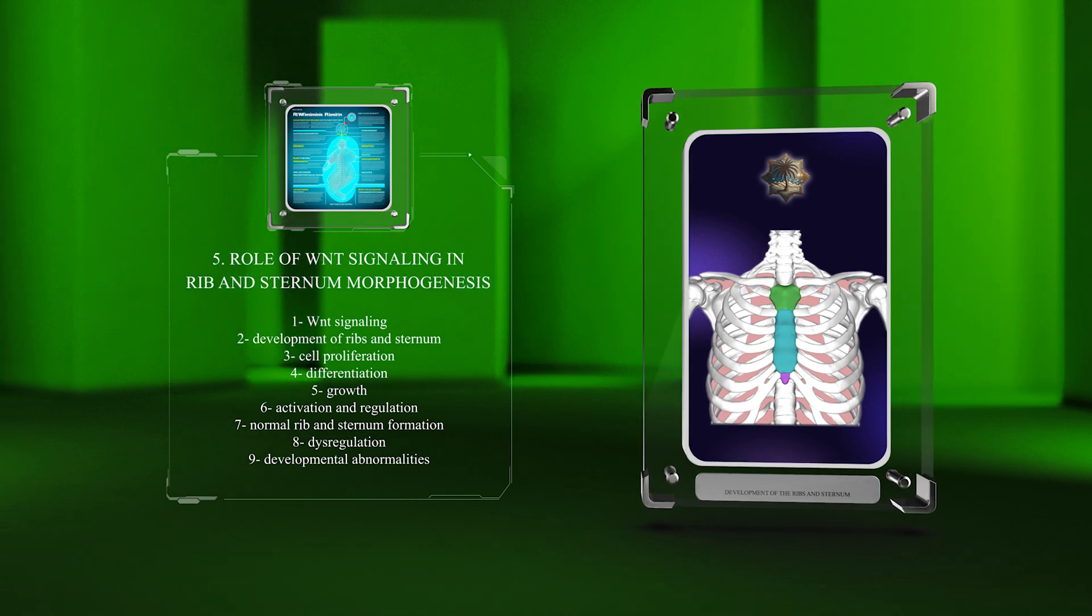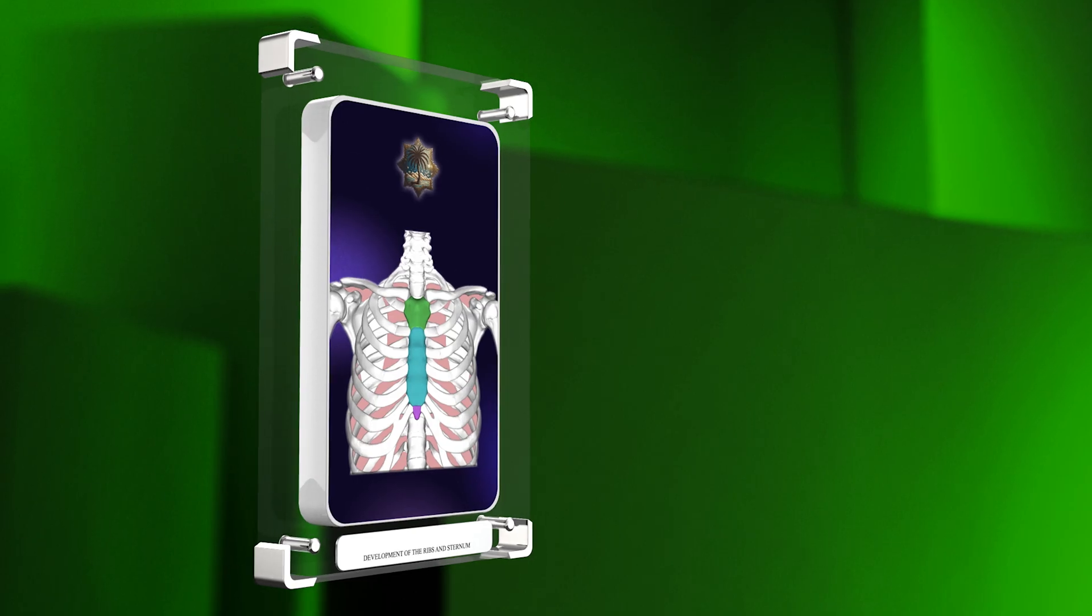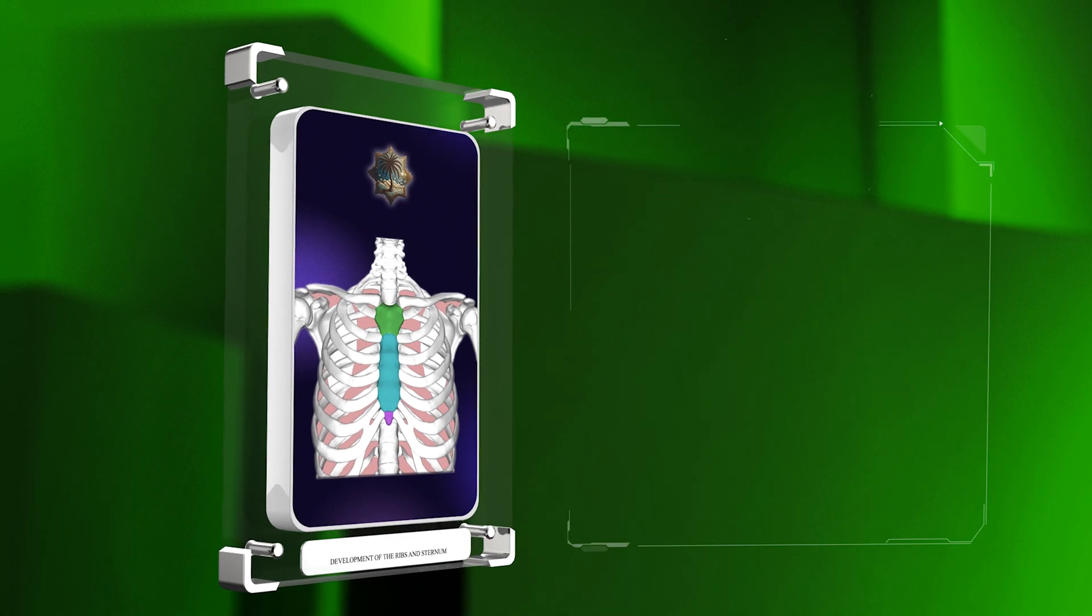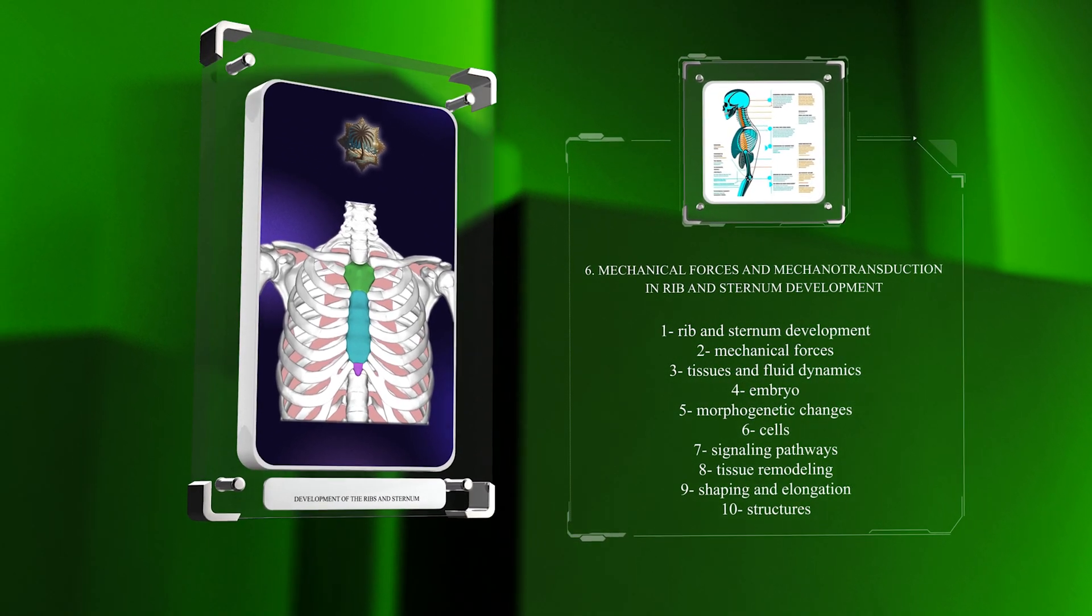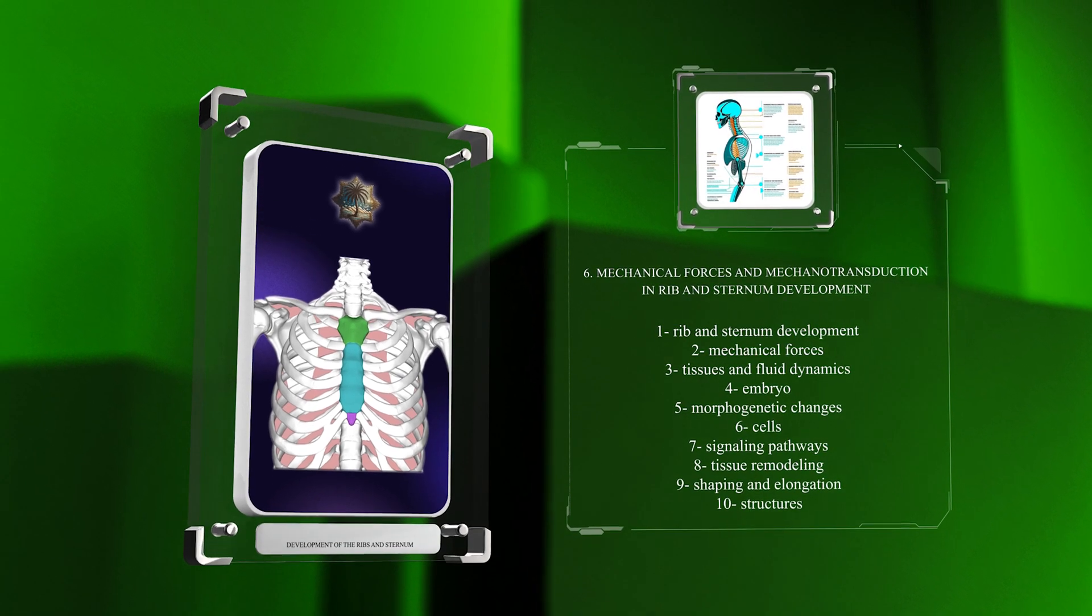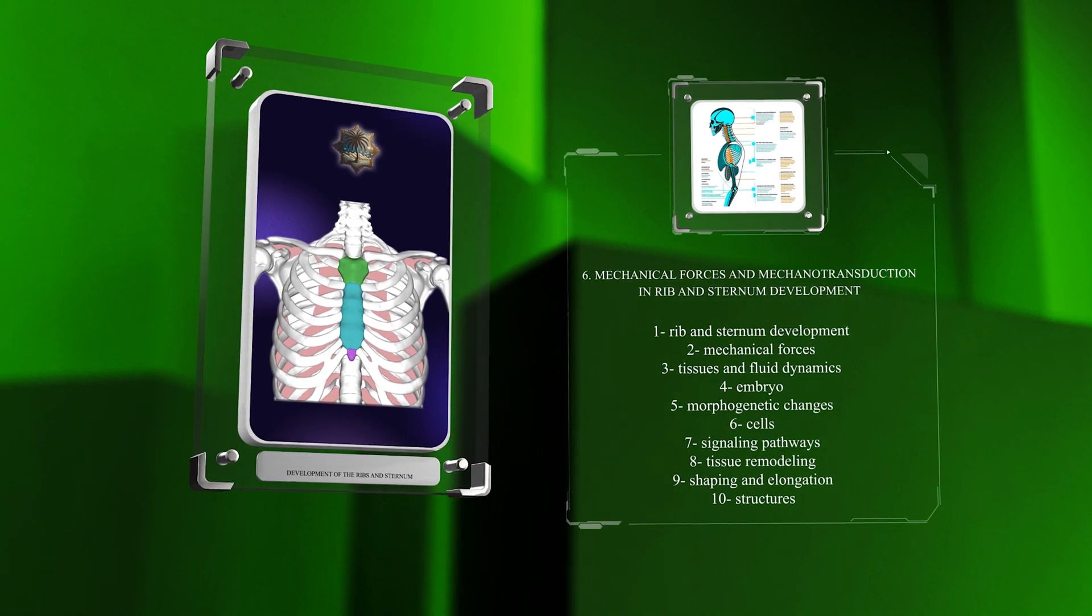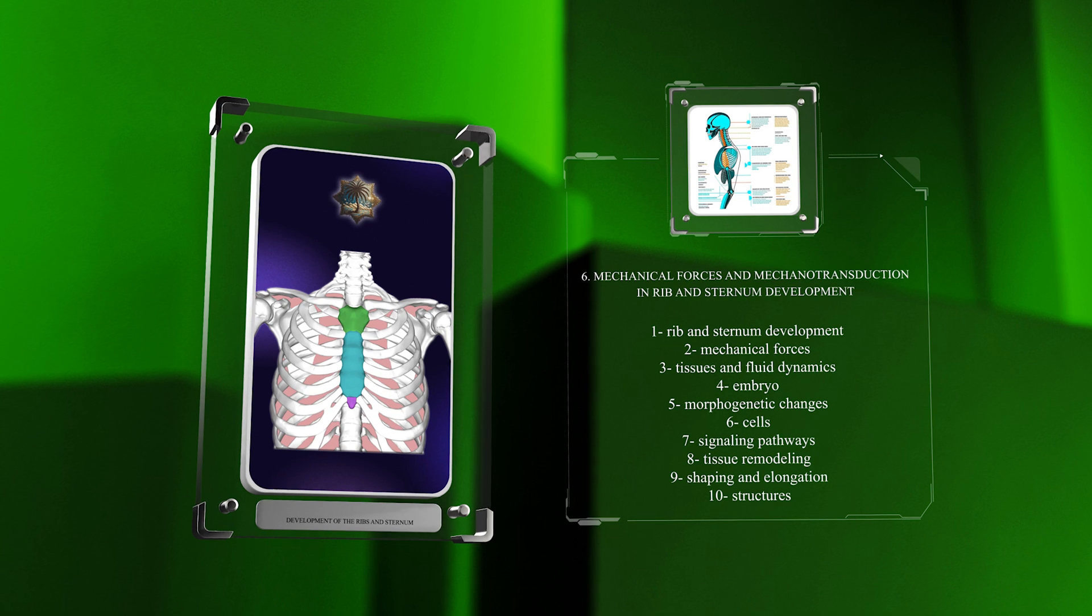During rib and sternum development, mechanical forces exerted by tissues and fluid dynamics in the embryo influence complex morphogenetic changes. Cells sense these forces and activate signaling pathways to regulate tissue remodeling, contributing to the shaping and elongation of these structures.